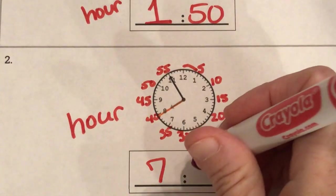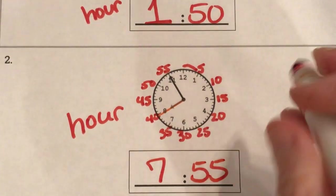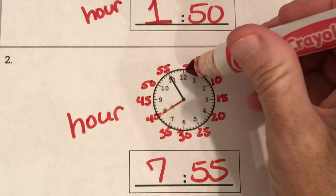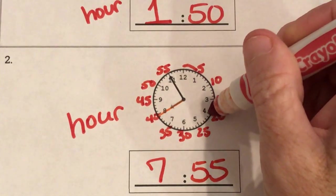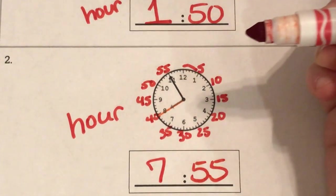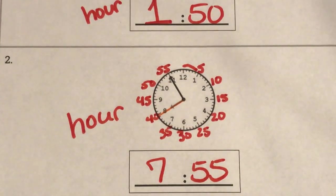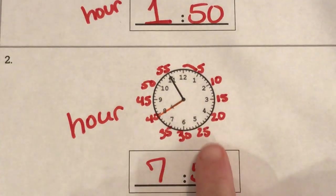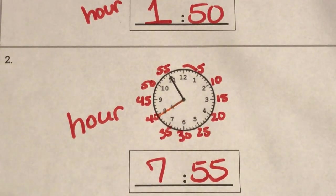So my minute hand is pointing to 55 and what that 55 represents is if I was to count all those tiny little tally marks there would have been 55. So the way I read this time is it's 7:55. So I make a break here. So 7 and then I say my minutes together: 55.